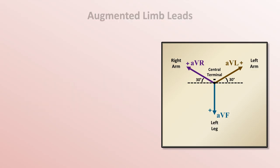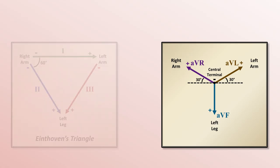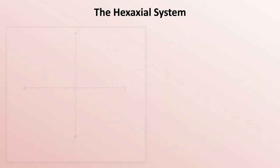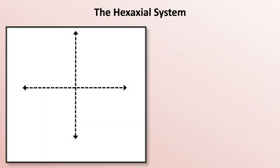We can now combine the augmented limb leads and the standard limb leads into a unified reference system known as the hexaxial system. Imagine a two-dimensional plane using polar coordinates such that 0 degrees is defined as pointing to our right but the patient's left, and positive 90 degrees is pointed straight down.